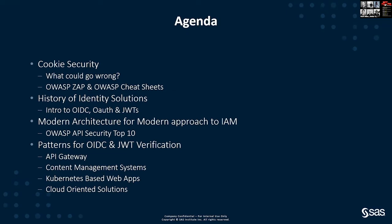We'll go into a history of identity solutions, starting way back in the 90s with Web Access Management, then talk about SAML and OIDC, and go through the terminology and concepts associated with OAuth and JSON Web Tokens. For anyone new to JWTs and OAuth, it can be scary at first because of all the terminology, but I'll show code snippets to demonstrate there really isn't that much coding involved — just a lot to learn in terms of concepts and terminology. We'll also cover microservices-based architectures and the OAuth API Security Top 10, and talk about RBAC — role-based access control — as it relates to mitigating those issues.